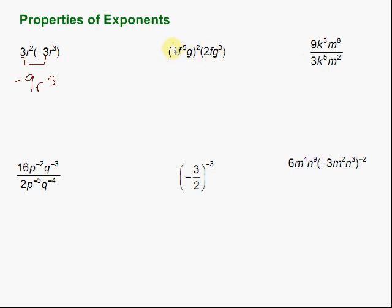Let's take a look at the next one. In this case, we have a power to a power. So what we're going to do is take each piece within the parentheses and take that to the second power — we're going to square it. So the 4 is going to be squared: 4 squared. Then we have f to the fifth, and that's going to be squared. When we have a power to a power, we need to multiply those exponents. So 5 times 2 gives us f to the tenth. And then we have g — remember, this is just g to the first — and we're going to take that to the second power. 1 times 2 is just 2, so g squared.